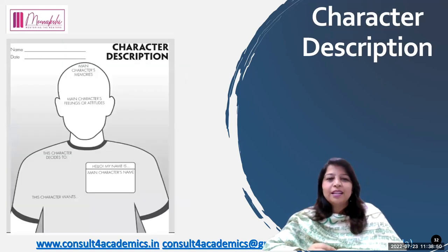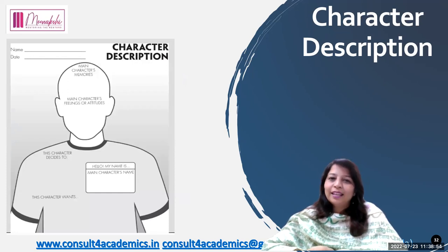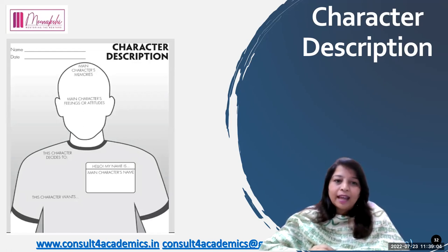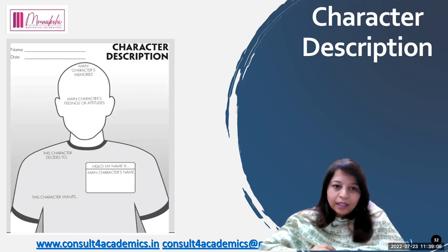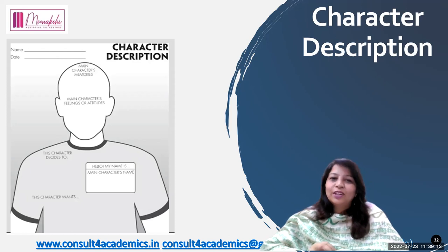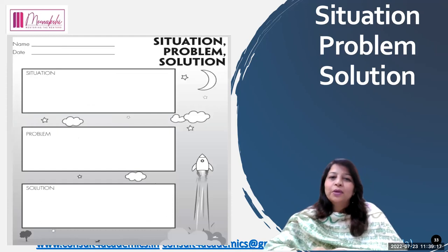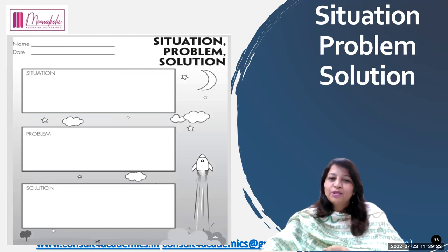Next is character description. Ask your students to describe the character: main characters, main character's feelings, memories, what the character decides, what the character wants — all the details about the characters they have to mention. Now, situation-problem-solution: they have to write about the situation, then the problem, then the solution.